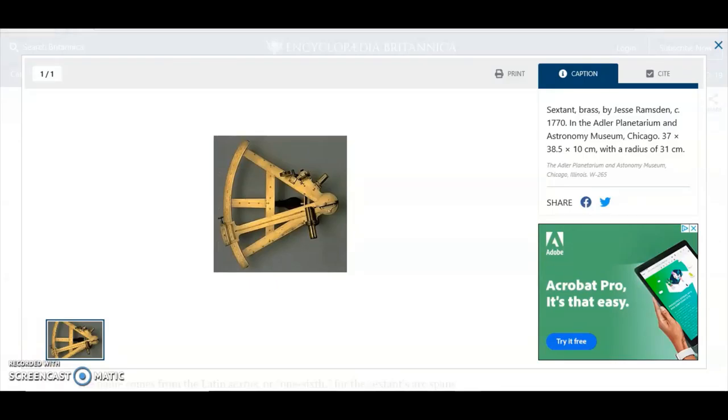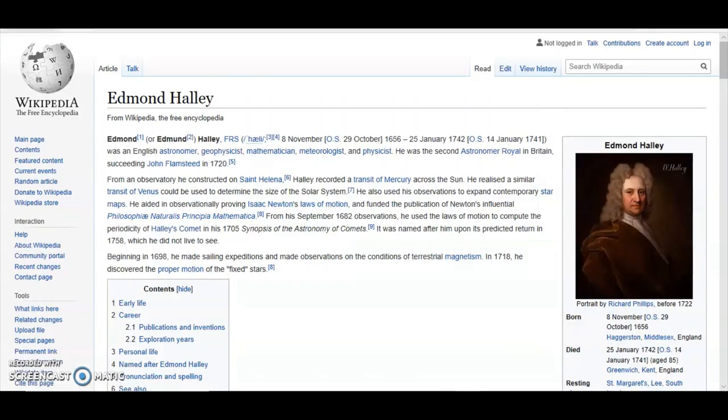It wasn't until the invention of the sextant that real oceanic exploration began. This is Sir Edmund Halley, yes, he of the Halley's Comet. He was a member of the Royal Society and later to become the second Astronomer Royal after John Flamsteed.